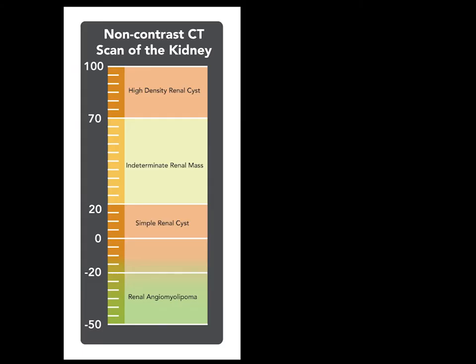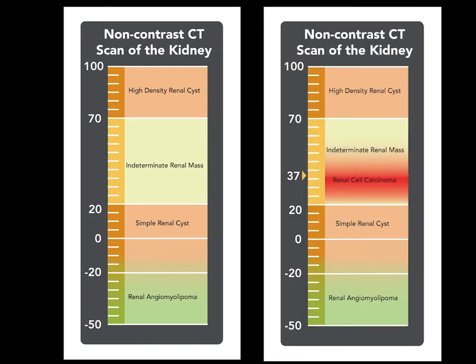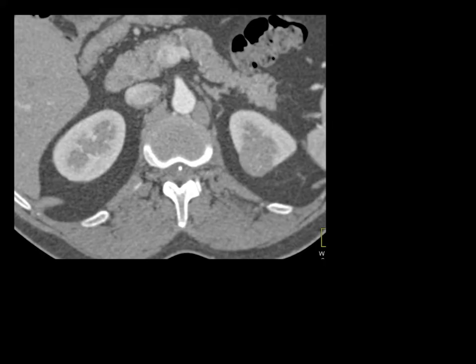We made a chart for non-contrast scans of the kidney: 20 to 70 is indeterminate, over 70 is a high-density renal cyst, under 20 is a simple cyst, and minus 20 would be an angiomyolipoma — with minus 37 being the classic measurement where concern is greatest.